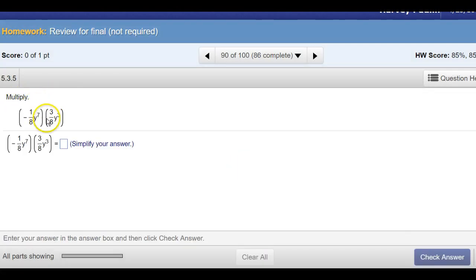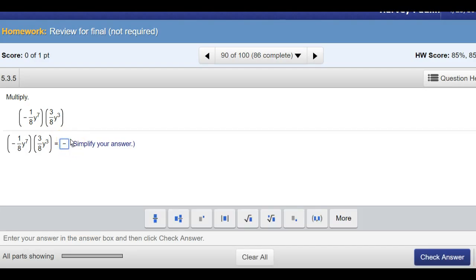Now, again, this is multiplication. We have fractions. So, again, a good technique would be, what would be your sign of the answer? Well, a negative times a positive, we're going to have a negative there. And then we're going to have a fraction. Nothing will cancel out, so it's 1 times 3 is 3 over 64. And then it's going to be y to the what power. Just add your exponents to the 10th. And that should be your answer.